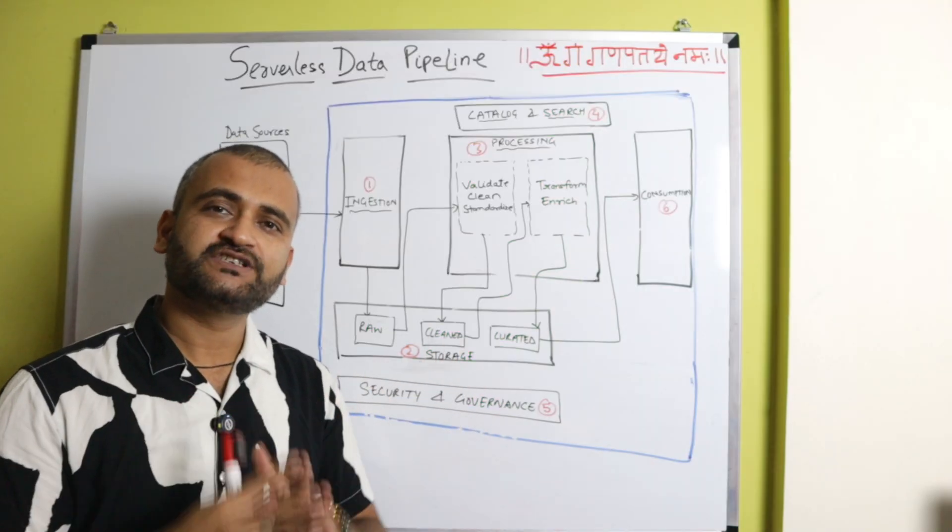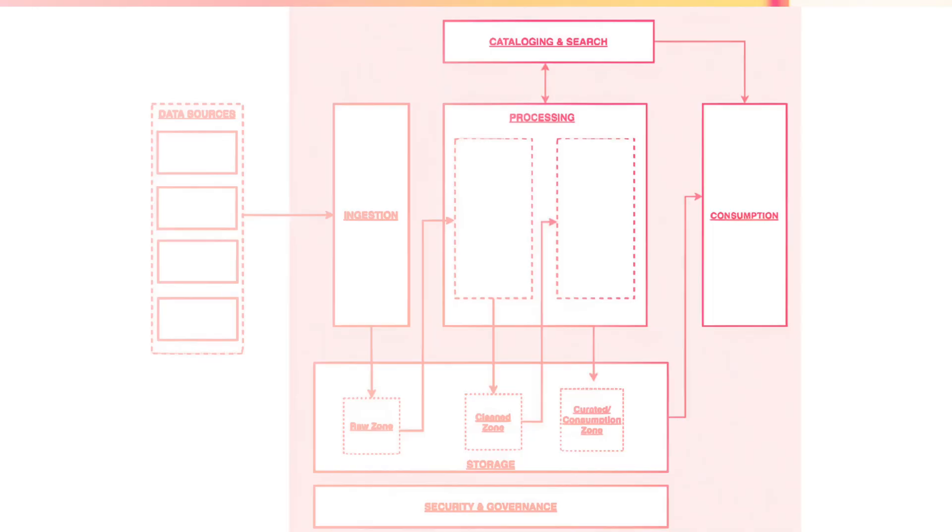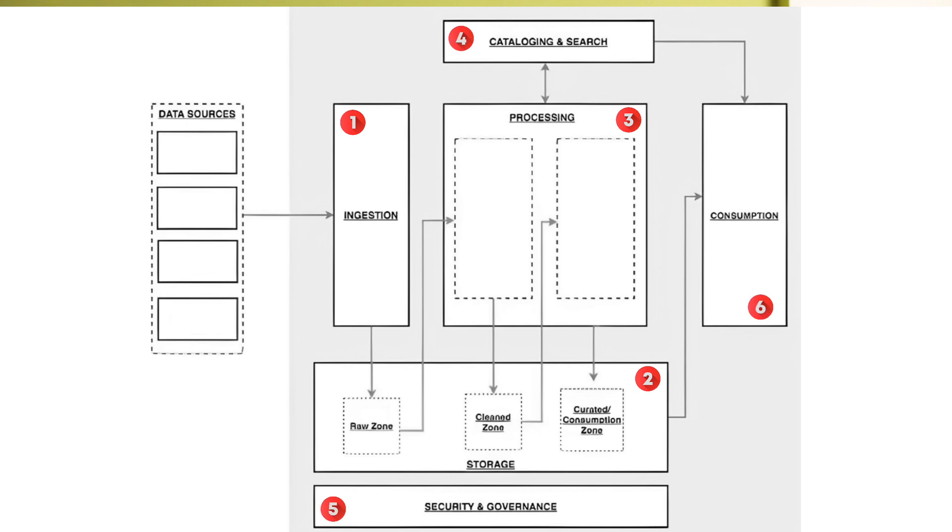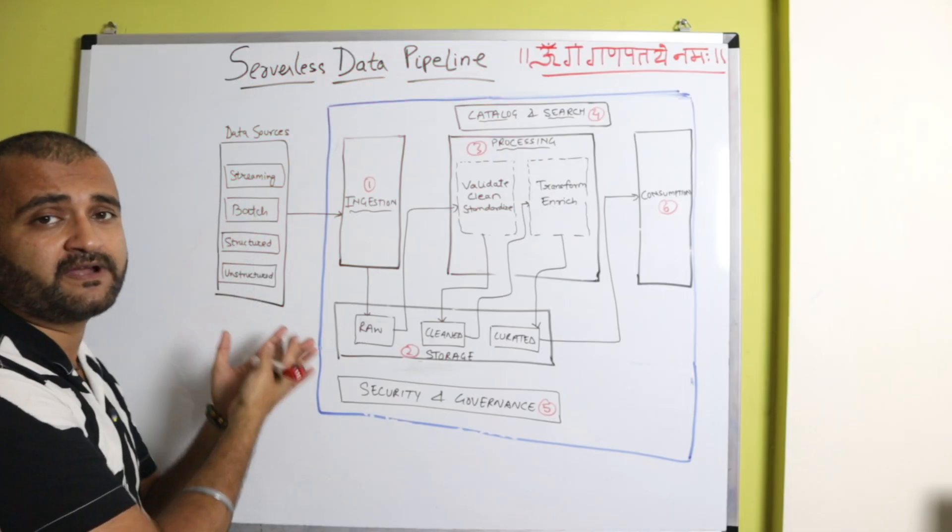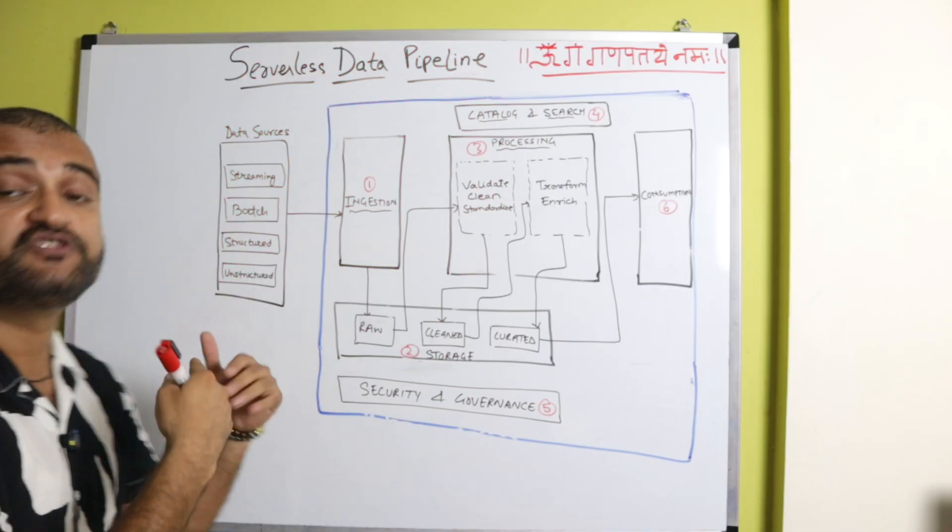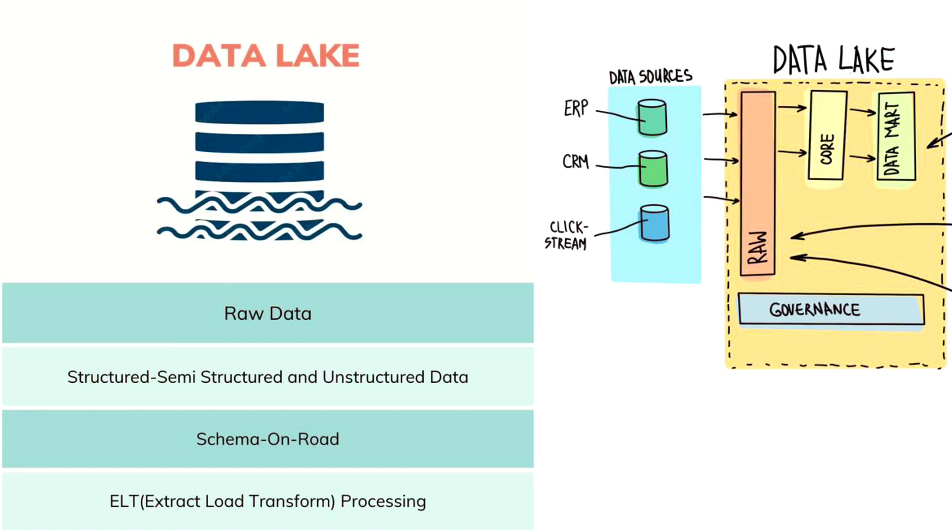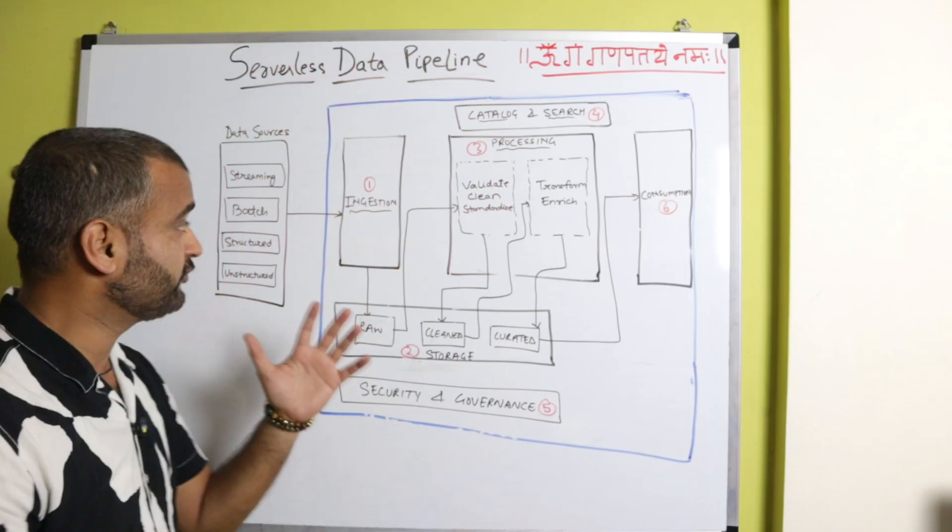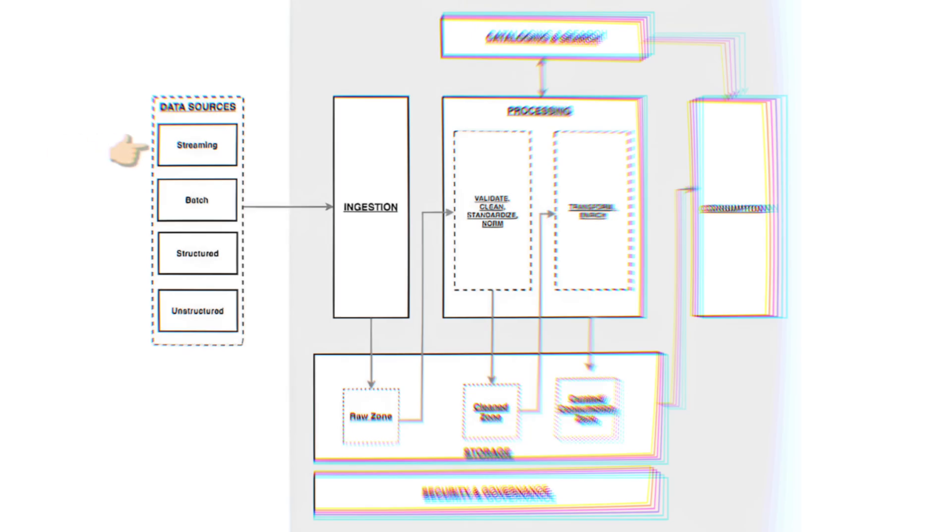So any logical data pipeline architecture will have primarily these six areas. So everything starts from your different kinds of data sources, which you obviously want to store into a data lake, for example. So for that, you will have streaming data, batch data, structured, unstructured data.